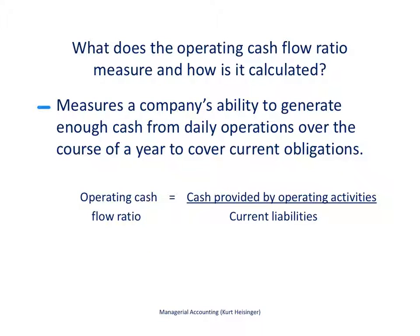Let's start by talking about the operating cash flow ratio — what it represents and how we calculate it. The operating cash flow ratio measures a company's ability to generate enough cash from the daily operations over the course of a year to cover current obligations, which we often call current liabilities.